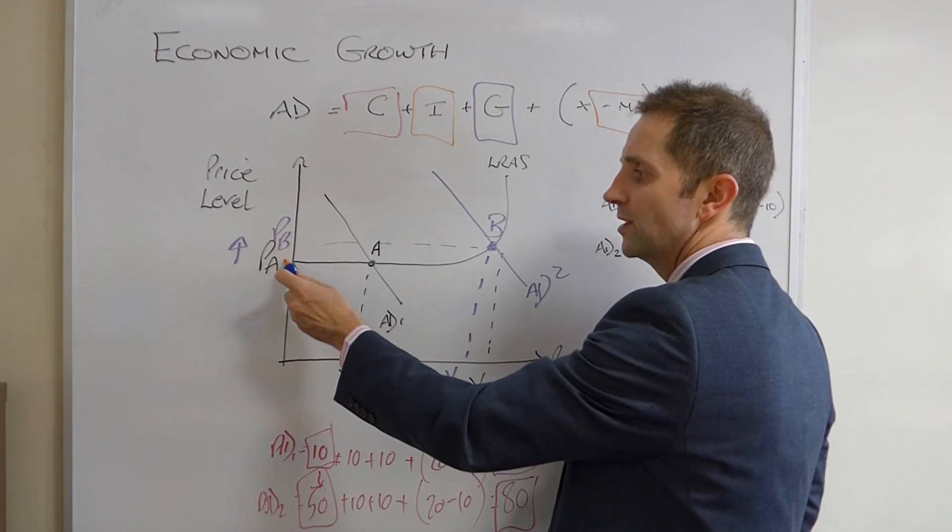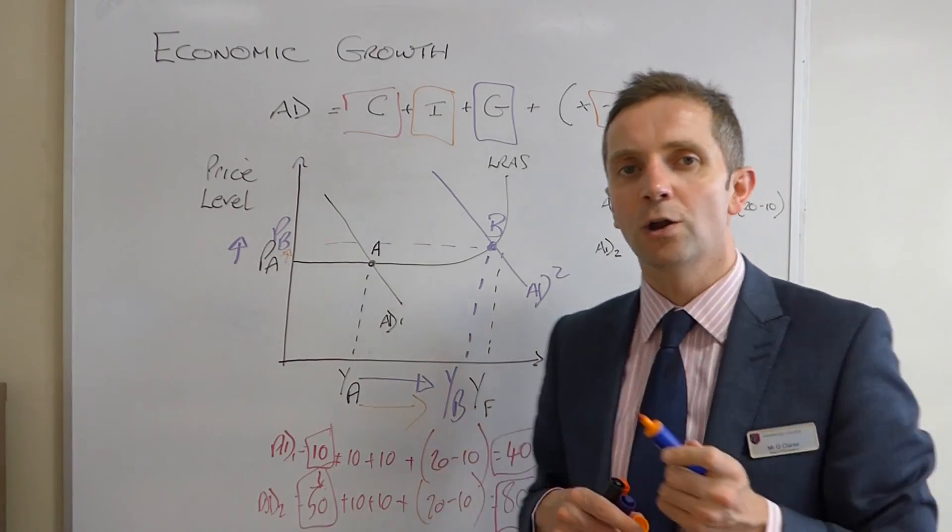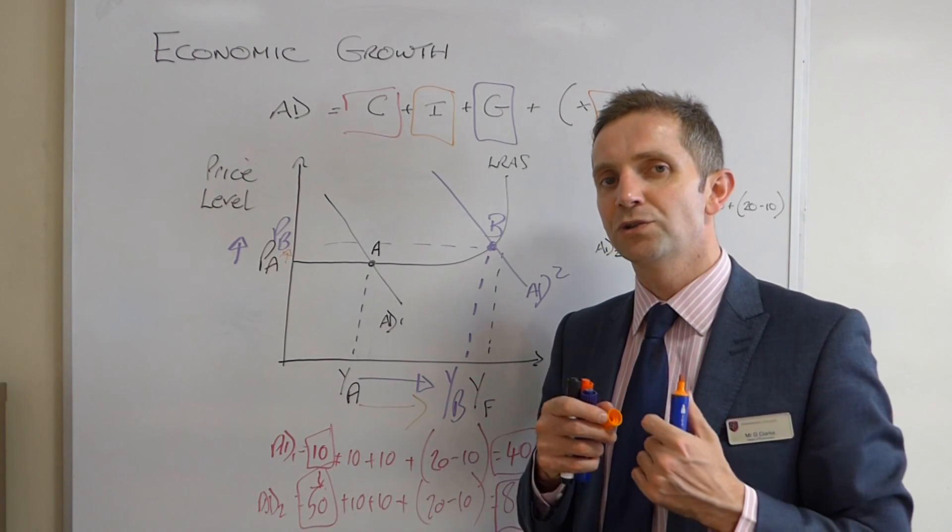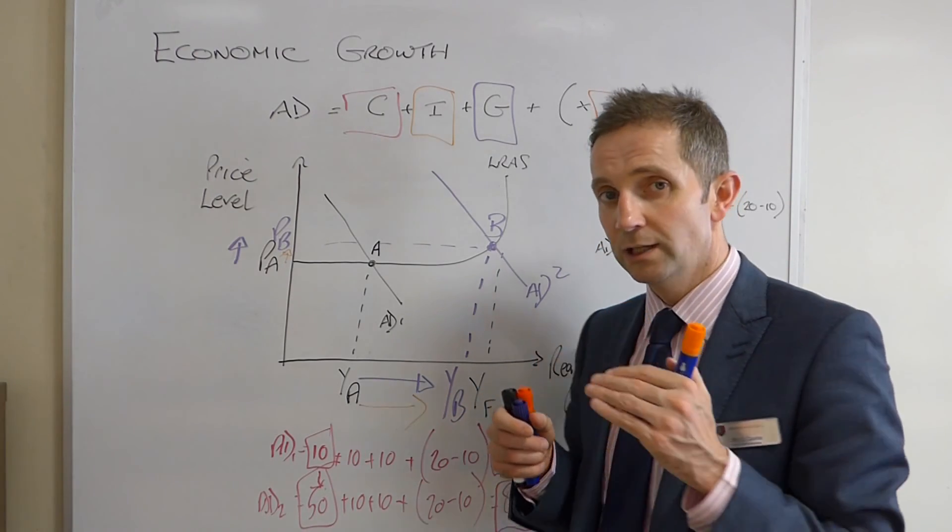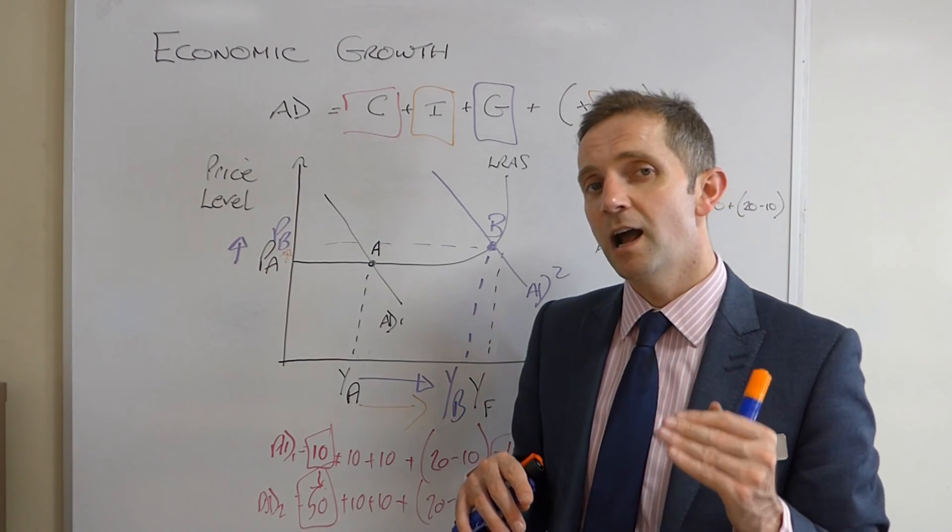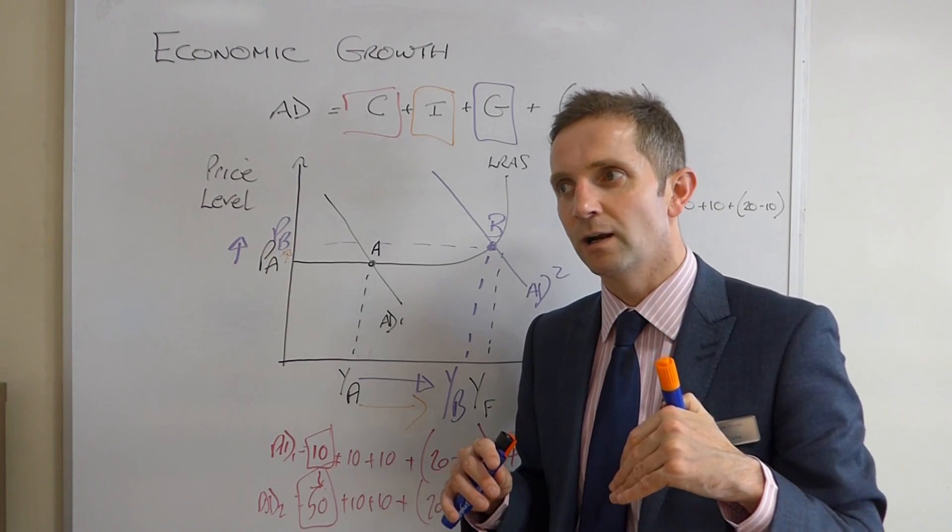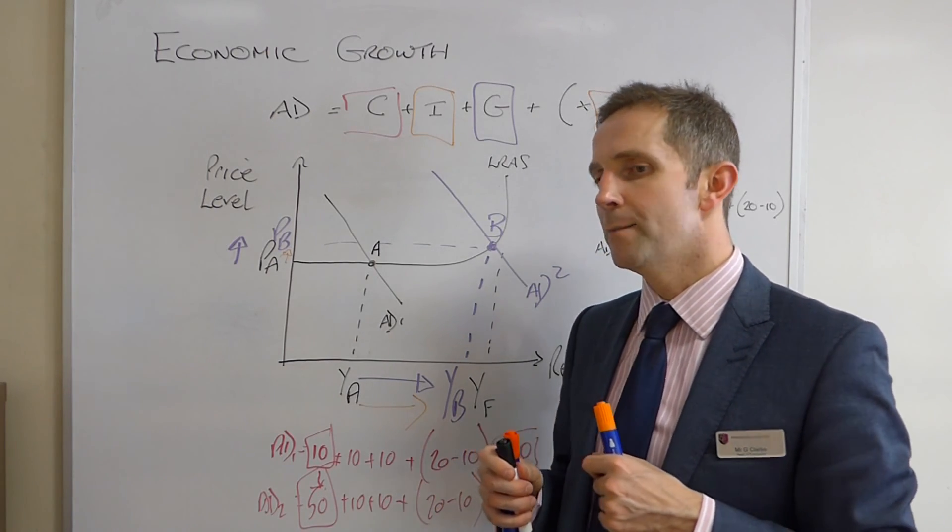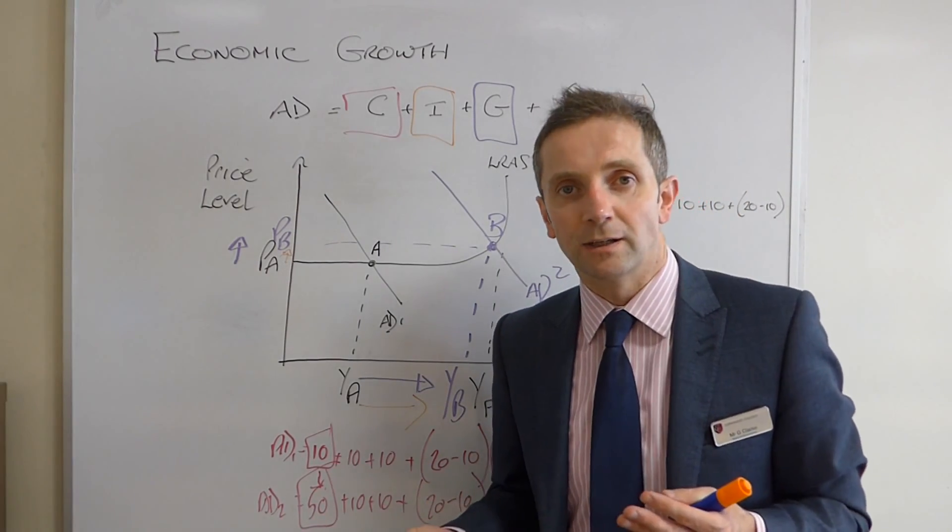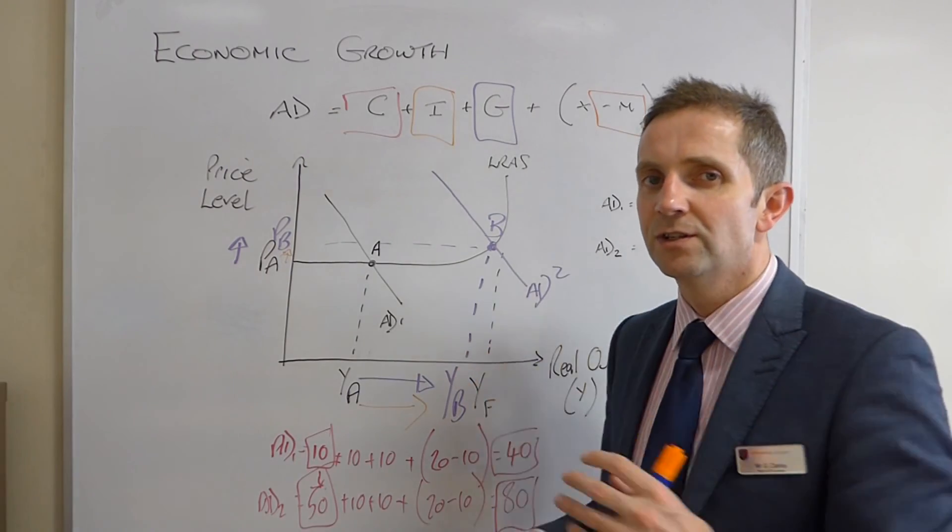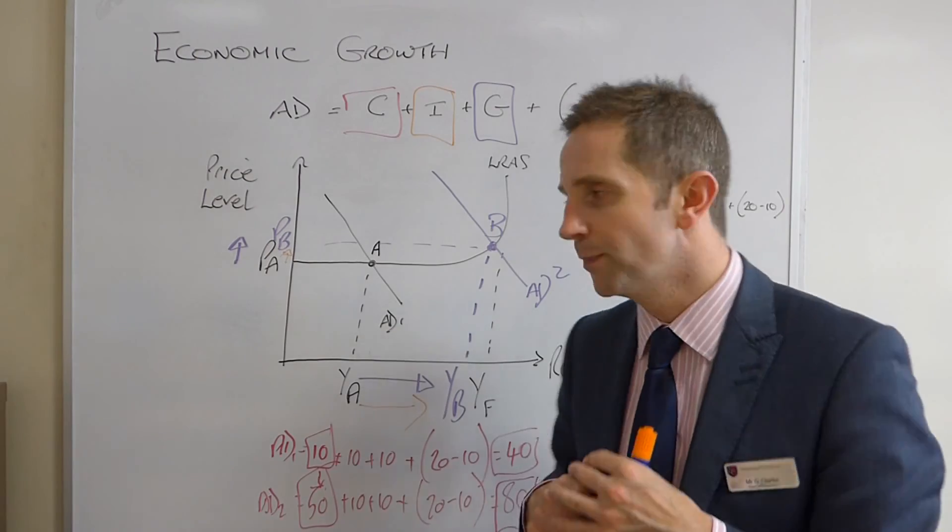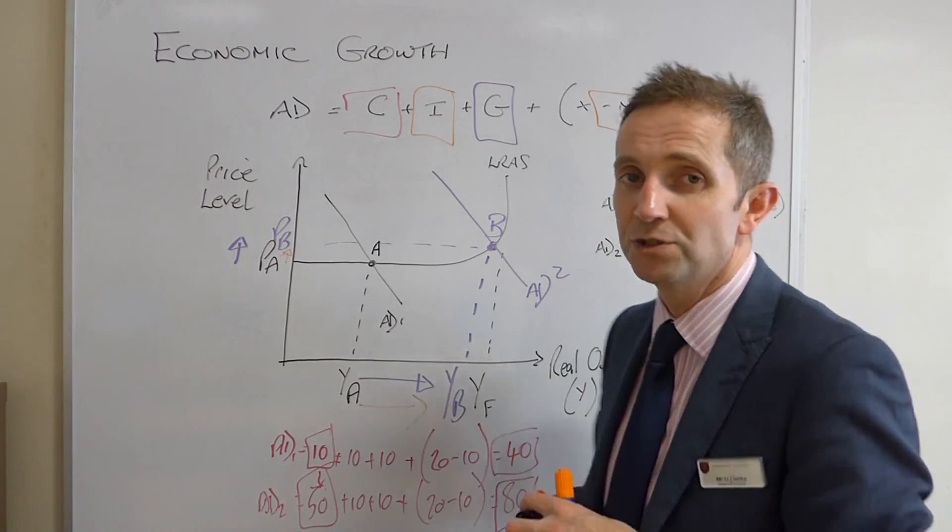But, look at what's happened to the price level. The price level has gone up from PA to PB. So, we're building in inflationary pressures into the economy, which, at low and sort of stable rates, is okay. But, once it starts to get higher, and starts to fluctuate maybe a bit more unpredictably, I believe is the word I'm looking for, then that becomes problematic. So, the whole management of this starts to become more and more complicated the more we delve into it. But, that's as far as we're going to delve into it in this one, ladies and gentlemen.